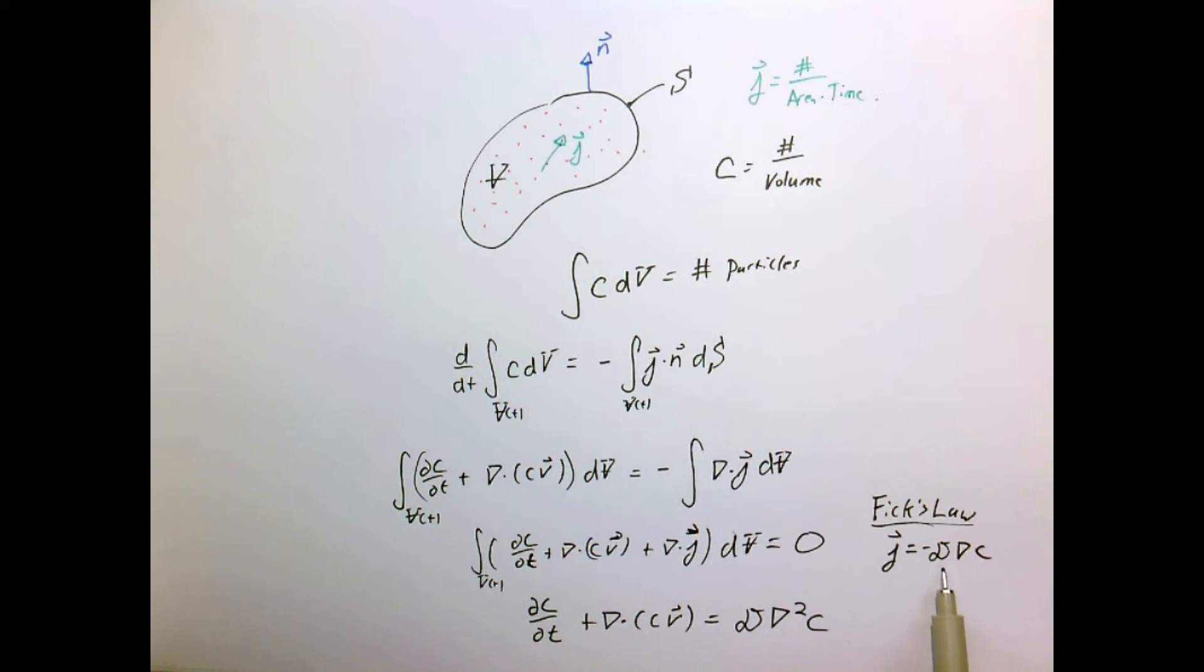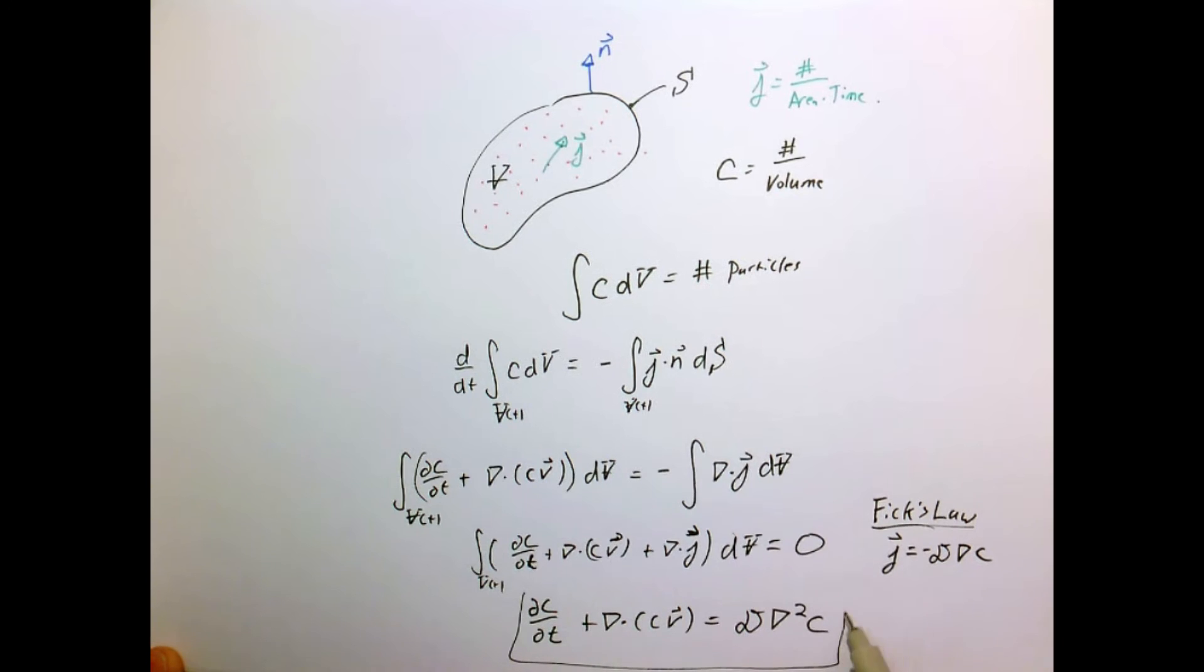I'll move the D outside my divergence operator, assuming the diffusivity is constant. We're left with a final equation that looks very similar to what we saw with purely diffusive properties, such as heat conduction, except we have this additional term that relates to the concentration being carried around by the velocity field.